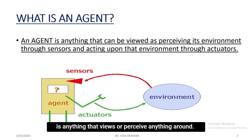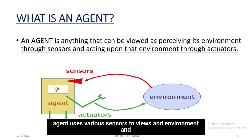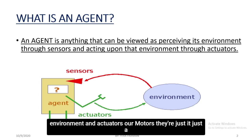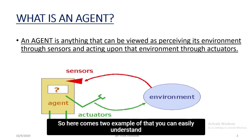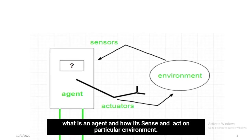An agent is something that perceives anything around it. It makes a decision based on what it views or perceives. The agent uses various sensors to view an environment and uses actuators to act upon an environment — actuators are motors, whatever the agent's motor function is, that is what the agent uses to act upon its environment. Here is an example to easily understand what an agent is and how it senses and acts on a particular environment.